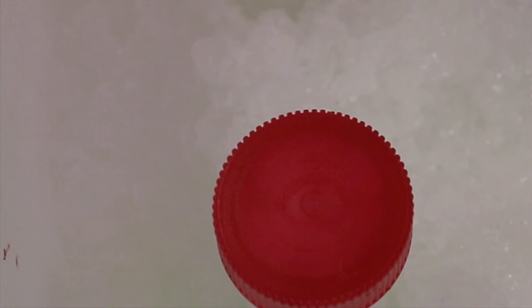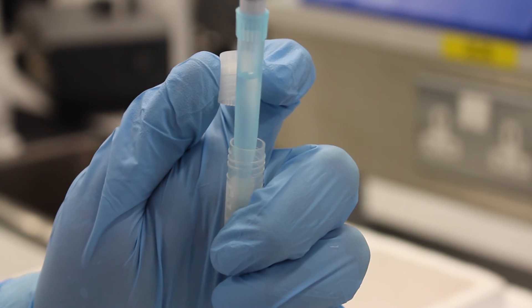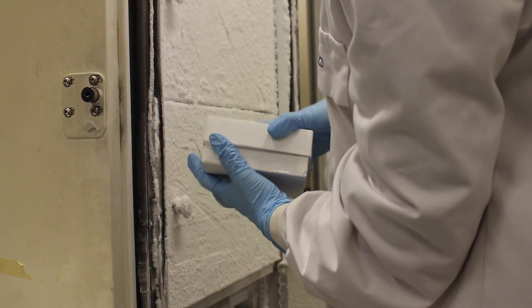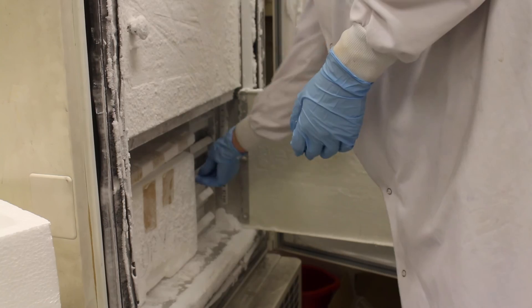The re-suspended pellets are then incubated on ice for 20 minutes. Aliquots are then made into pre-chilled cryo tubes and the cells can be stored at minus 80 degrees Celsius. These cells can now be used for a transformation.